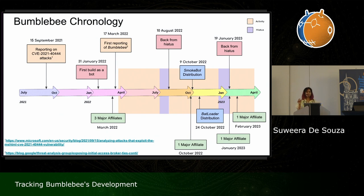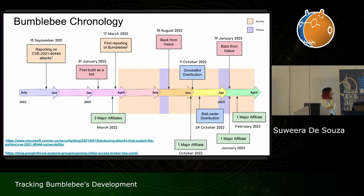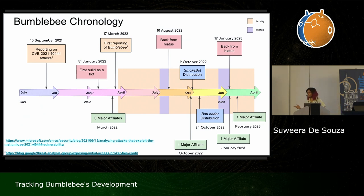The Bumblebee string was used in the user agent header when it made requests to the server. The same affiliates used a similar loader when targeting a CVE in a campaign back in August 2021 — Microsoft reported that incident in September of that year. But that loader was mainly used for distributing Cobalt Strike and didn't have the bot-like capabilities we see in Bumblebee now. We believe Bumblebee started as a bot on January 31st, 2022.